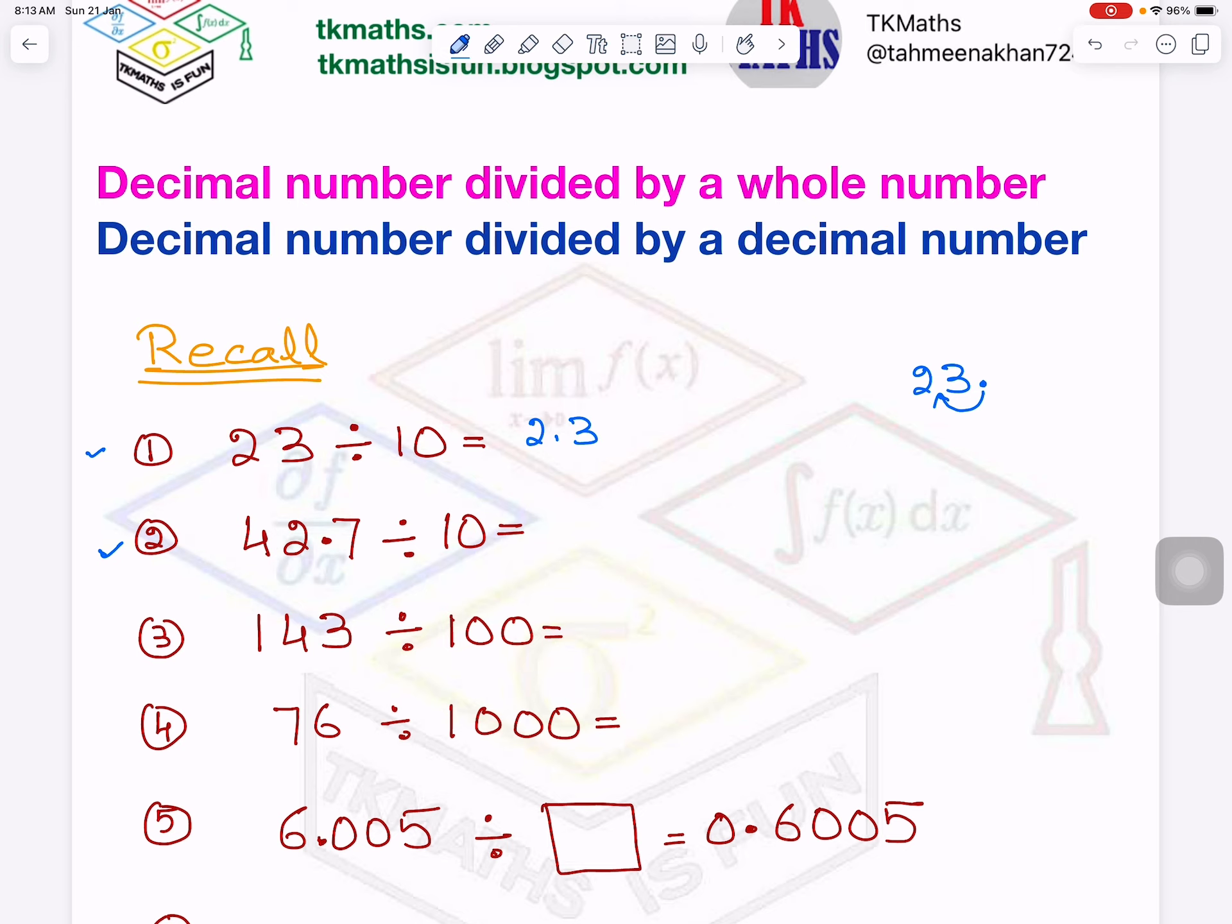Similarly, in the second question, 42.7 divided by 10. This decimal will come here, left. In multiplication, right, but in division, left. So it is 4.27.